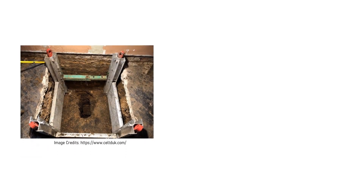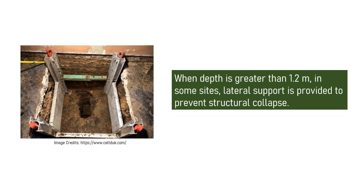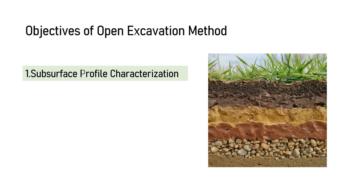In situations where the depth needs to be greater than 1.2 meters, based on the texture of the soil, we go for lateral support to prevent structural collapse. The open excavation or trial pit method serves several objectives in soil exploration. The first objective is subsurface profile characterization — to provide a detailed understanding of the soil layers, their composition, their thickness, and their arrangement beneath the ground surface.